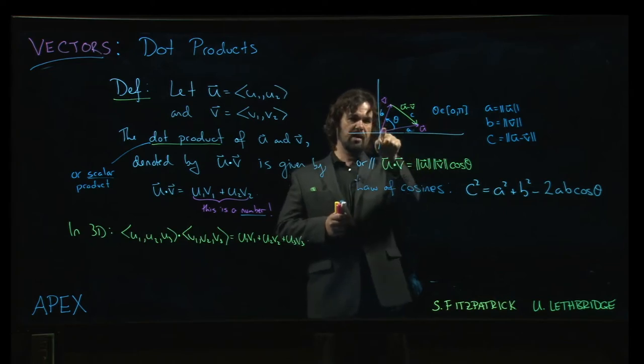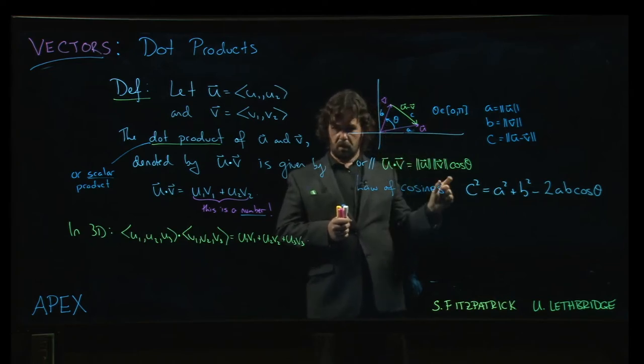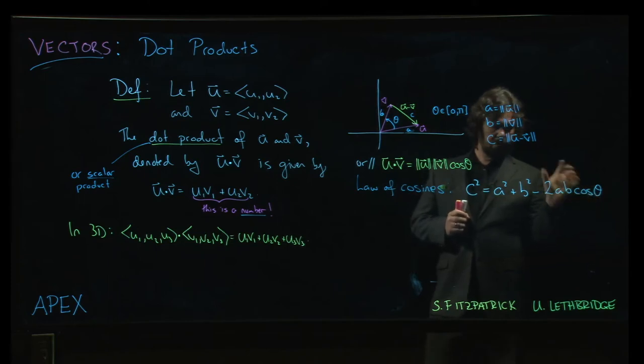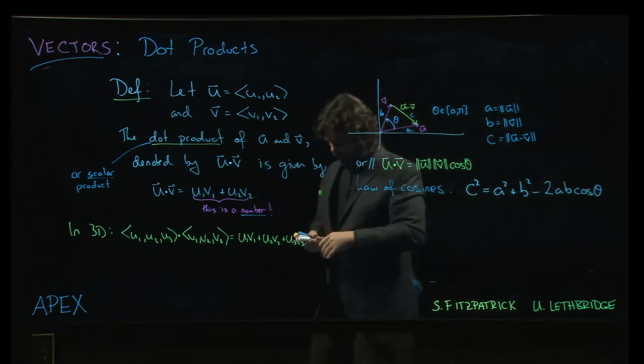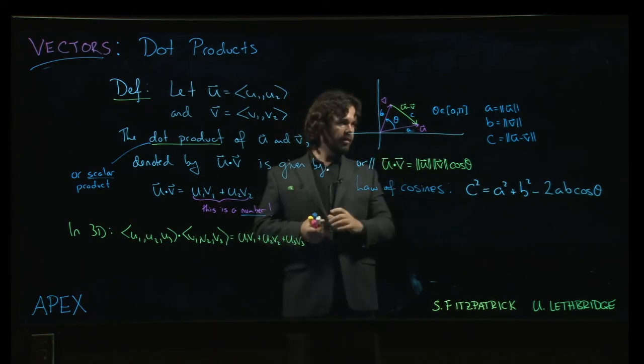Now, if you do have a right angle, if theta is actually a right angle, cos theta would be 0. That part goes away and you go back to the Pythagorean theorem. So, that's the law of cosines.